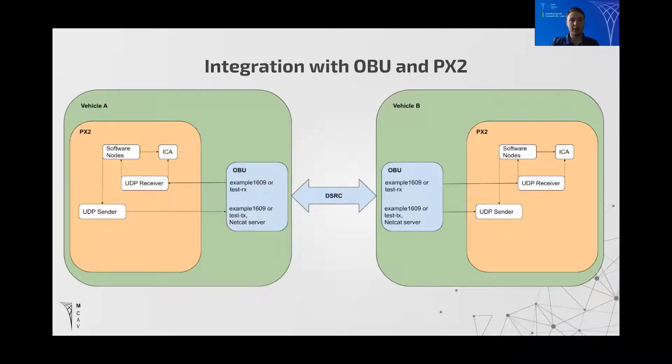We designed the system architecture shown on the slide to achieve full integration with ROS so that we can wirelessly send and receive any data from vehicle to vehicle. The OBU is connected to the PX2 which is the CARS central computer via an ethernet cable and we can send the contents of ROS messages to the PX2 using UDP.